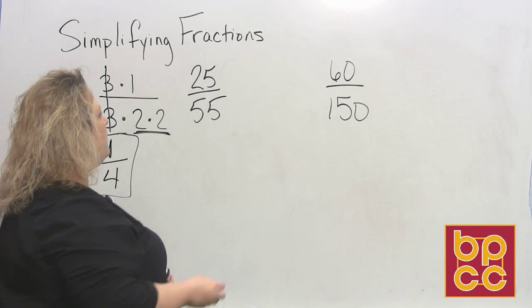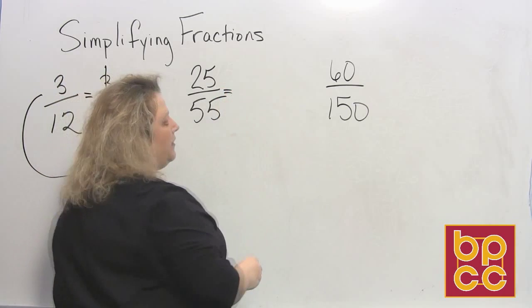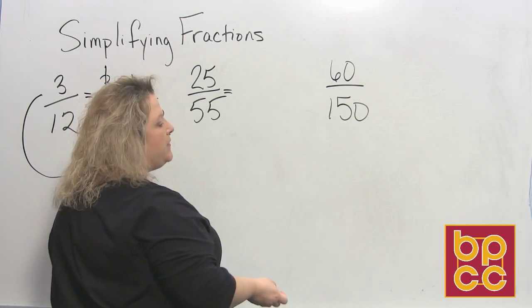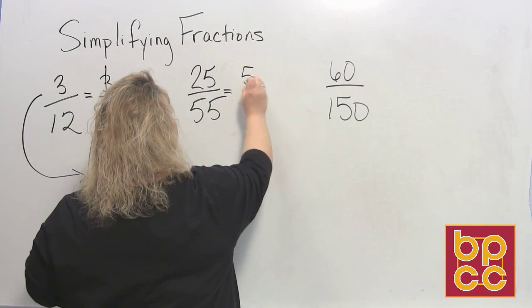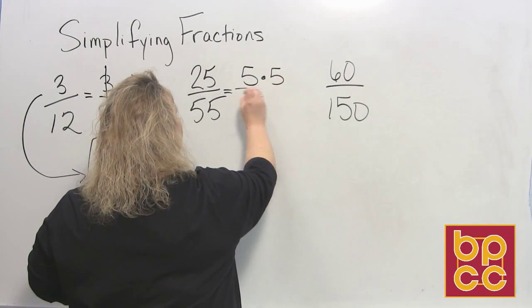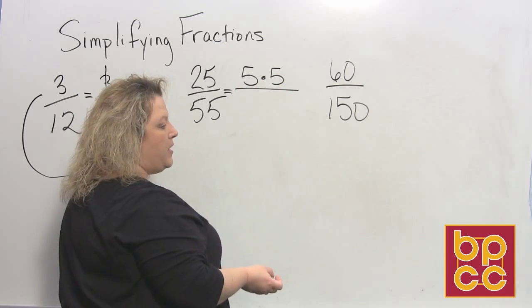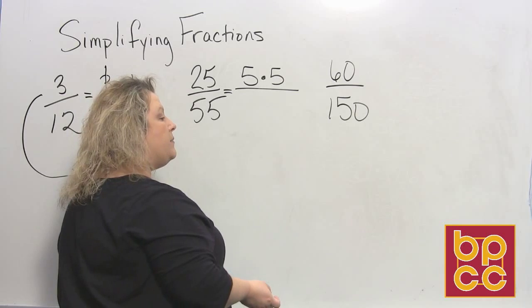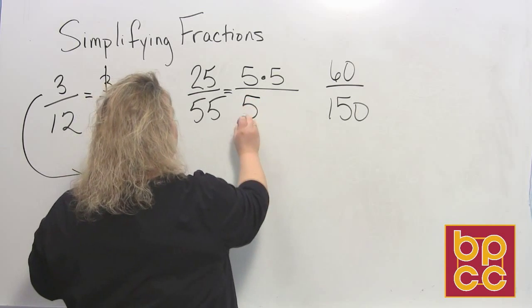Now, let's do another one. We have 25 fifty-fifths. So that makes what times what gives me 25? 5 times 5. Both of those are prime numbers, so I'm done with that. Then what times what gives me 55? 5 times 11.